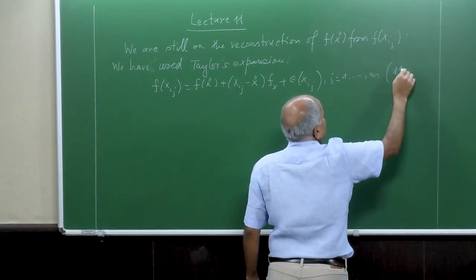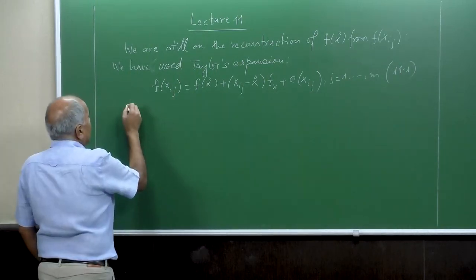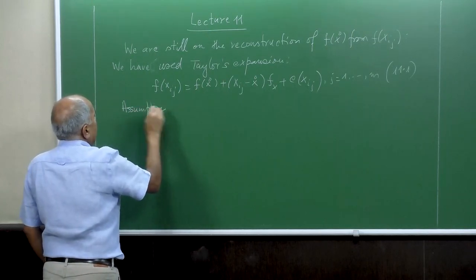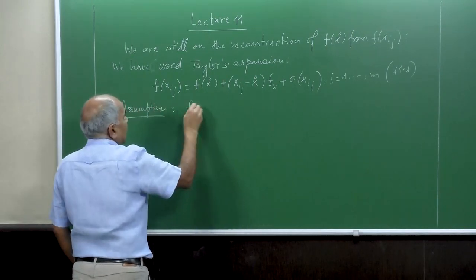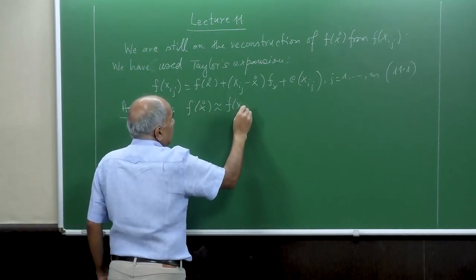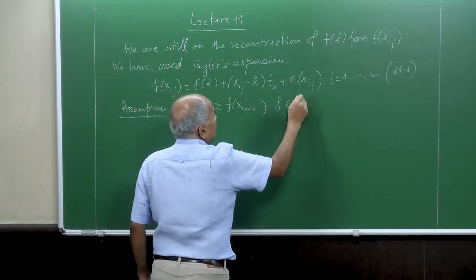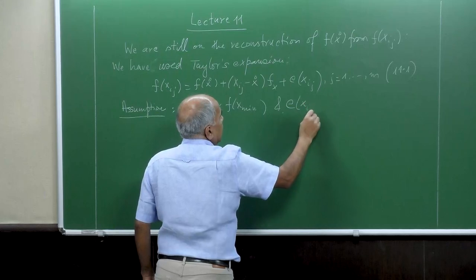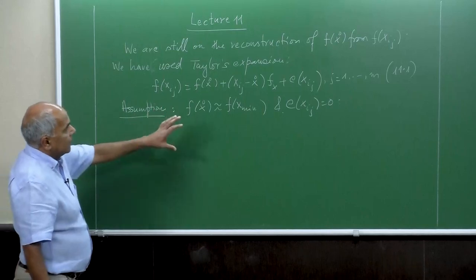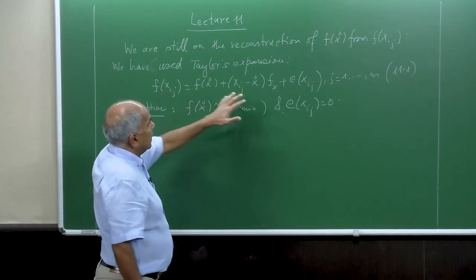Let us call it equation 11.1. The assumption was: f(x_0) ≈ f(x_min), and e(x_ij) = 0. Then we subtract f(x_min) from both sides of this equation.